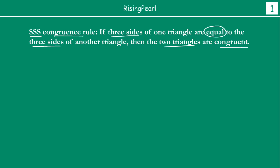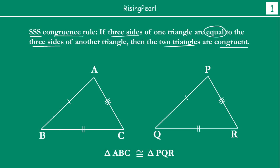So let us take some examples and understand this. If you have triangle ABC and triangle PQR, where AB is equal to PQ, AC is equal to PR, and BC is equal to QR — this is how we show that corresponding sides are equal. Here two dashes indicate BC is equal to QR, one hash mark shows AB is equal to PQ, and three hash marks show that AC is equal to PR.